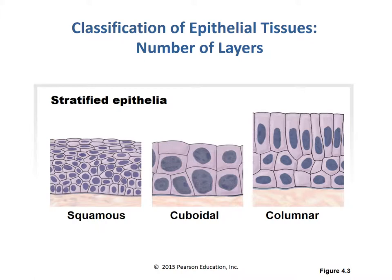In the case of squamous, a lot of the basal layer cells look very cuboidal, but noting the apical surface, it has that fried egg shape. Looking at columnar, it also looks cuboidal at its basal layer, but at the apical surface it is longer than it is wide, and therefore it is columnar. These are the different stratified varieties.